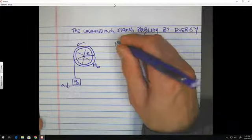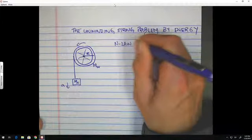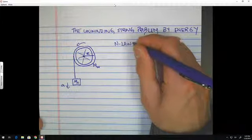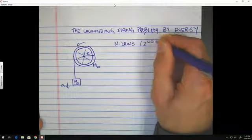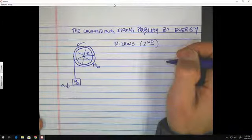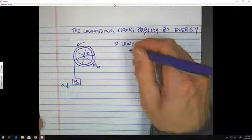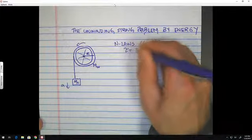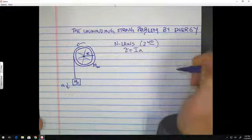So when we solved this by Newton's laws, just as a reminder, actually the second law, it was complicated. And we actually had to do, for the wheel, we had to do torque is equal to I times alpha. That gave us one equation.